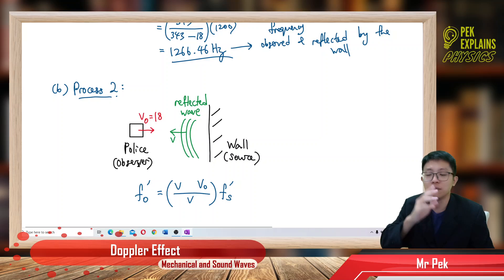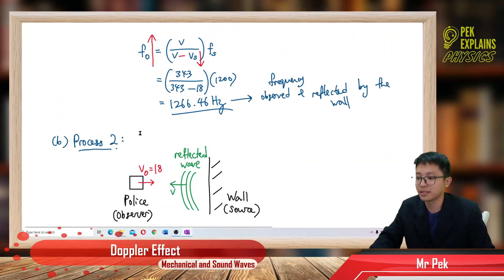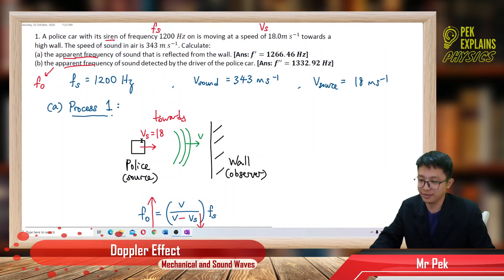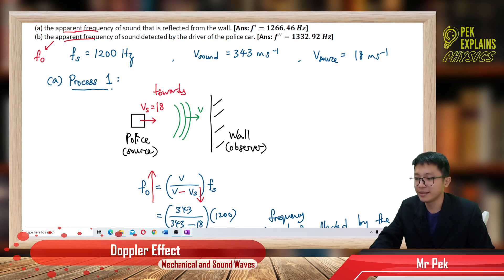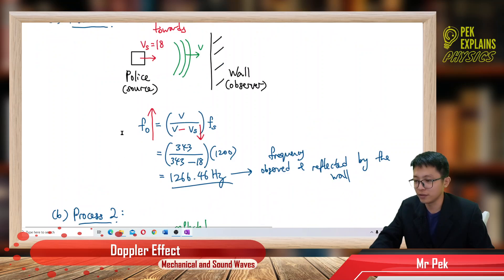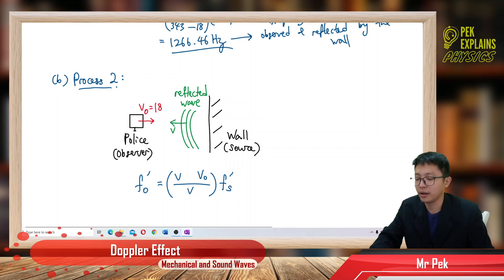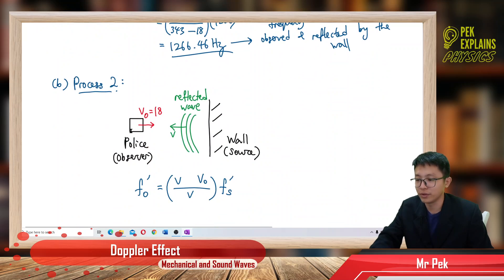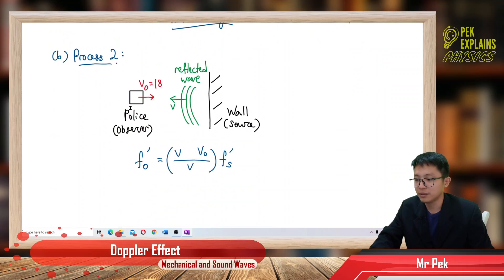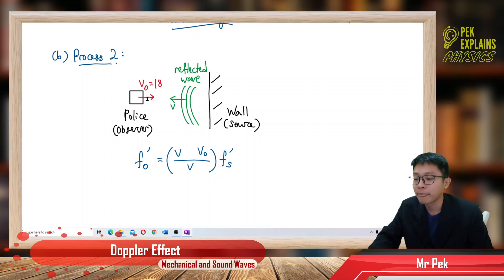The wall becomes the source and the police car is now the observer. The speed of the observer is still 18 m/s. The police car first functioned as the source, and now also functions as the observer receiving the reflected sound.